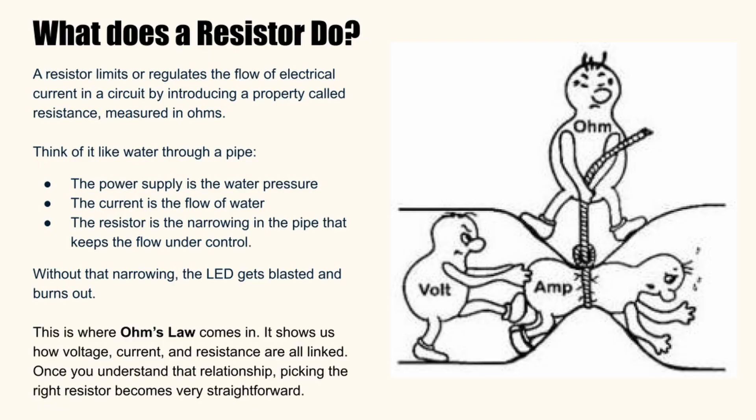Think of a resistor like a narrowing in a water pipe. The power supply, voltage, is your water pressure. Current is the water flow. The resistor, the narrowing that controls the flow. Without a resistor, the LED gets blasted with too much current and dies instantly.